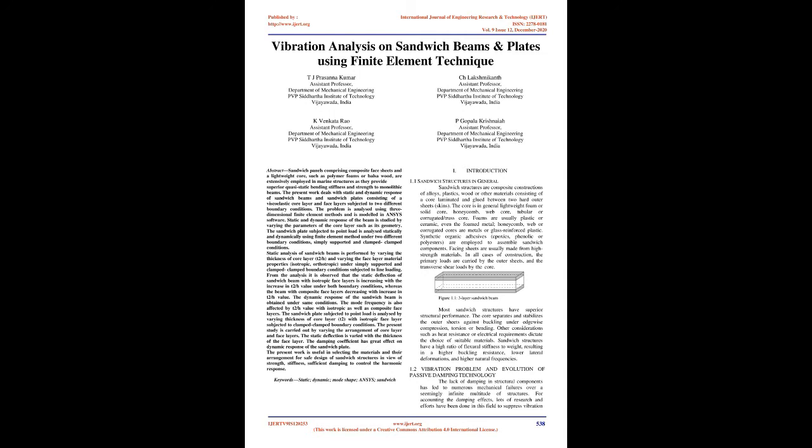Static analysis of sandwich beams is performed by varying the thickness of core layer, T2/H, and varying the face layer material properties — isotropic and orthotropic — under simply supported and clamped-clamped boundary conditions subjected to line loading. It is observed that the static deflection of sandwich beam with isotropic face layers increases with T2/H value under both boundary conditions, whereas the beam with composite face layers decreases with increase in T2/H value. The dynamic response of the sandwich beam is obtained under same conditions.